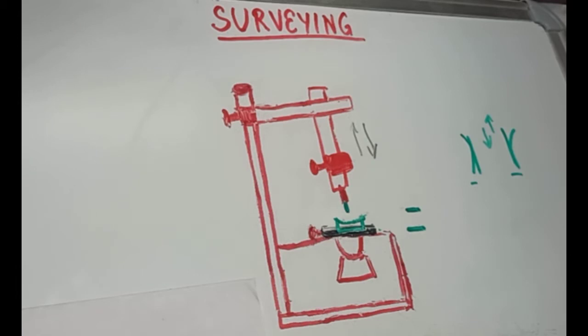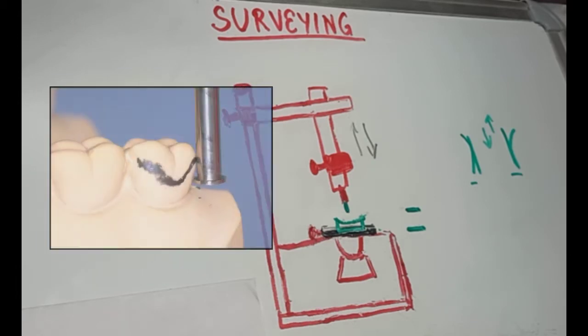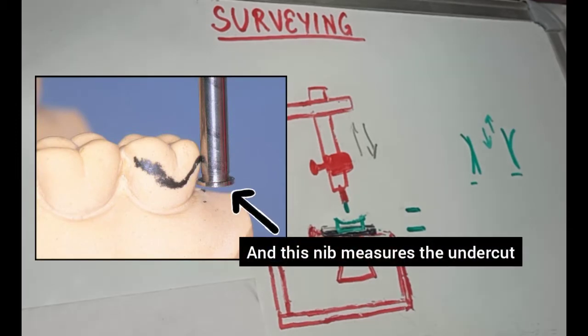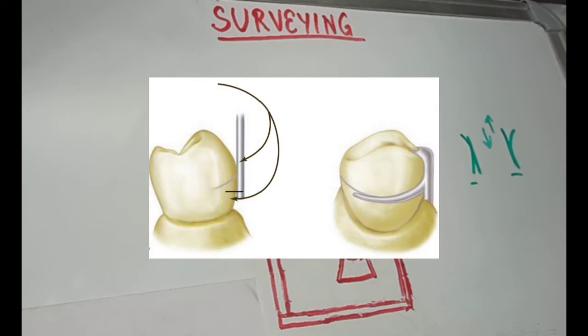Then, the undercut gauge is used to measure the potential areas of retention. The shank of the tool touches the height of contour. And remember, it is not always measured at the gingival crevice, but at the level we plan to place the retentive terminal of the retentive arm.